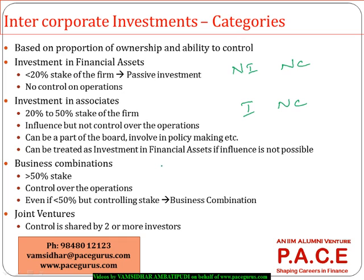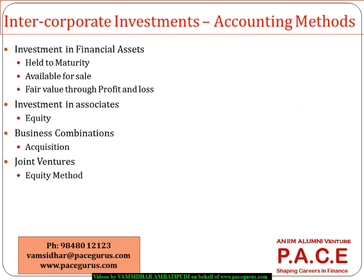The other dimension to this classification is control: no influence and no control goes as investment in financial assets; influence but no control goes as investment in associates; influence and control goes as business combination. For joint ventures, control is not with one party but with two or more parties. Control with one significant party is a business combination; influence but no control is investment in associates; and purely passive, no control, no influence is investment in financial assets.